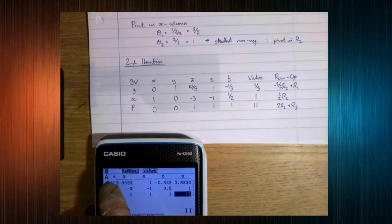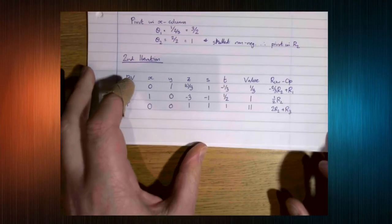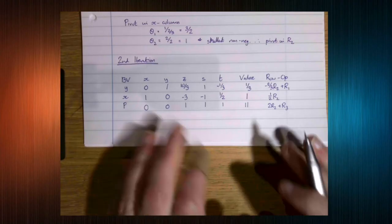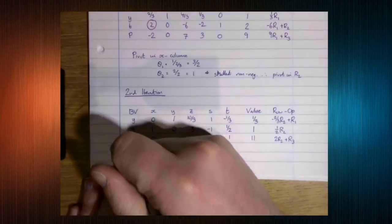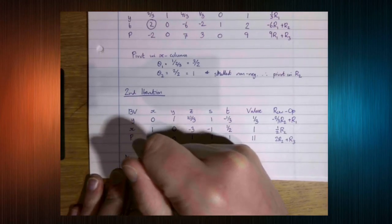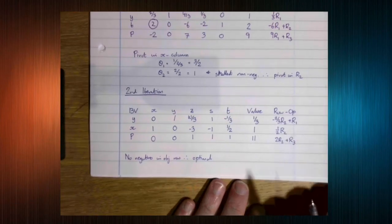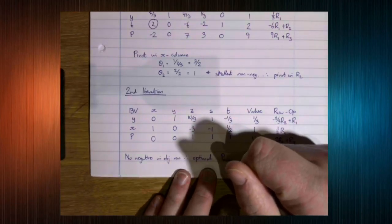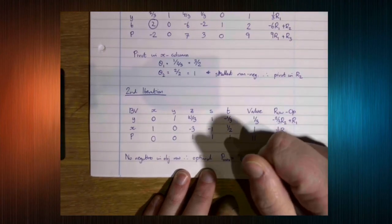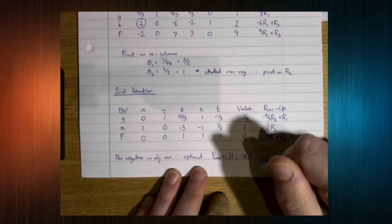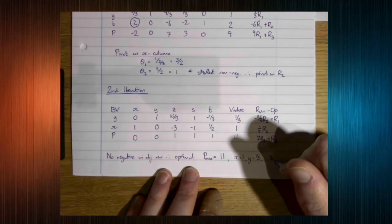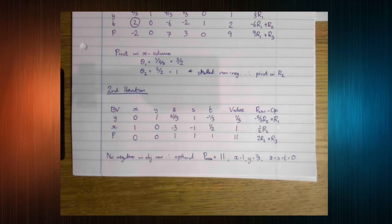There are no negatives in the objective row, which means we've found the optimal solution. No negatives in objective row — optimal. The maximum value of P is 11. x equals 1, y equals 1/3, and the non-basic variables z, s and t are all zero. That's a simplex example using the graphics calculator — hopefully that was useful.